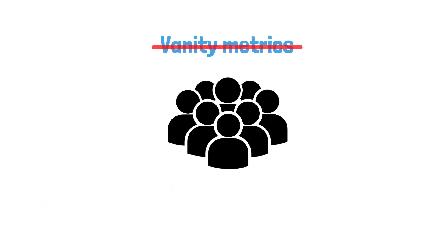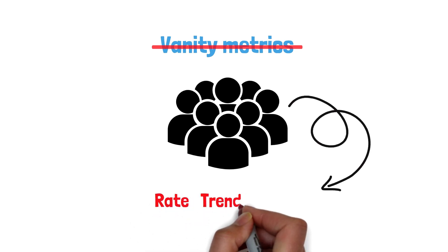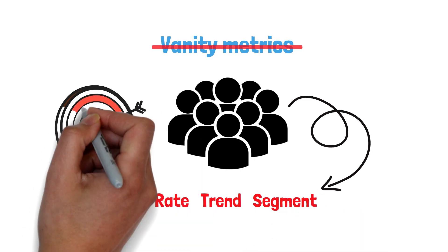Kill vanity metrics, big totals without decisions attached, e.g., raw page views. Upgrade them by adding context: rate, trend, segment, so they inform action.